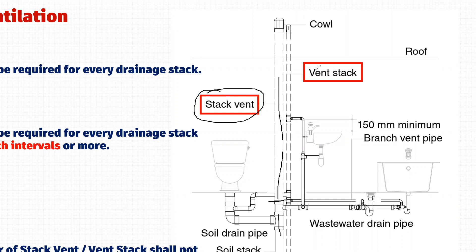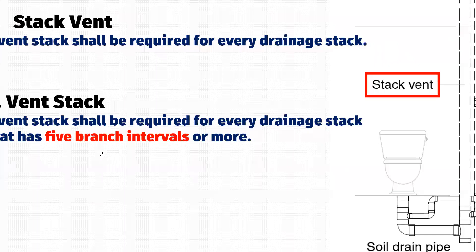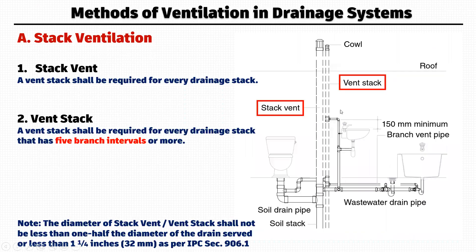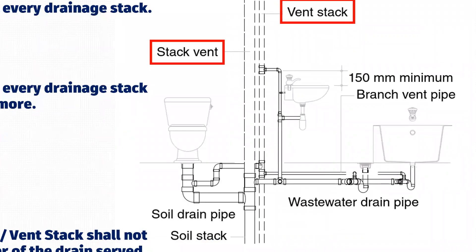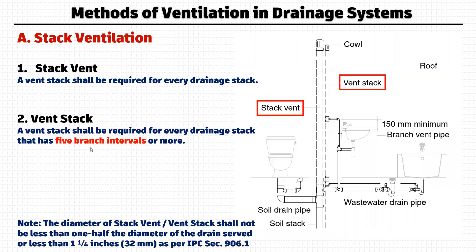The vent stack is a separate principle pipe provided for venting purposes. It is generally provided for a building having more than five branch intervals — that is, a five-plus story building. All the vent pipes from individual fixtures are connected to this vent stack. For the WC, lavatory, bathtub, and floor drain, each has a pipe connected to the vent stack. So the vent stack is a separate principle pipe employed for buildings having more than five branch intervals.